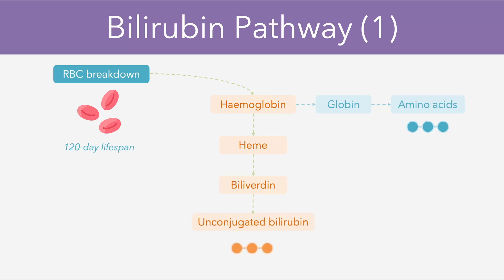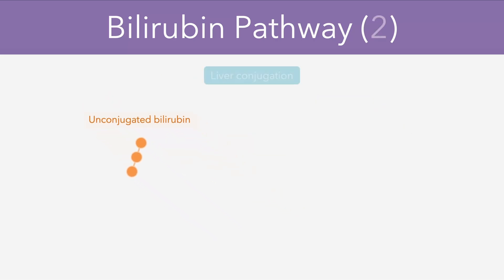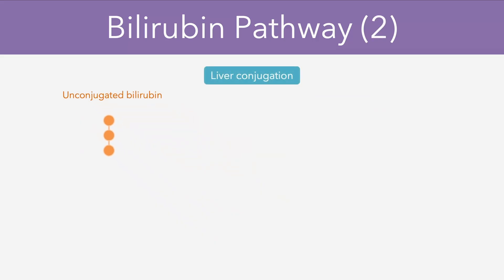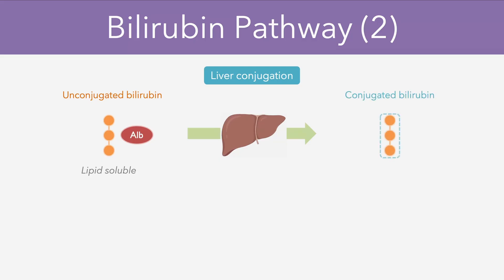Now importantly, these unconjugated bilirubin molecules are actually lipid soluble, meaning that they can't dissolve in water or in the blood without being bound to a carrier protein. In this case, these molecules of unconjugated bilirubin bind to albumin and they're then transferred to the liver where they're converted into conjugated bilirubin molecules instead.